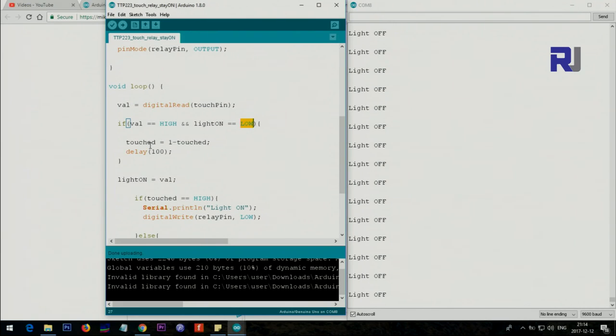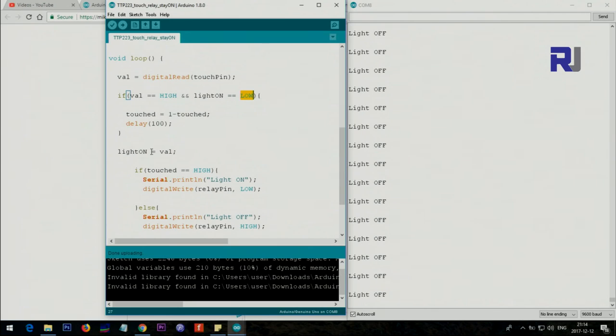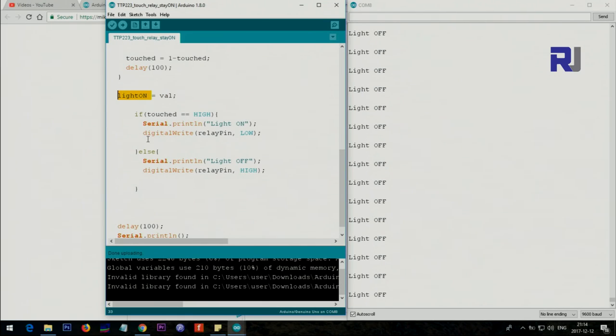Touch status, 1 minus touched, and then we set the delay equal 100 so we just wait one tenth of a second. After this, whatever is the light_on, for the light_on we just set the value. If this has been touched we just set it there. Then here we say if touched is equal high, then we say light_on, put this in here, and also pin relay_pin to low.